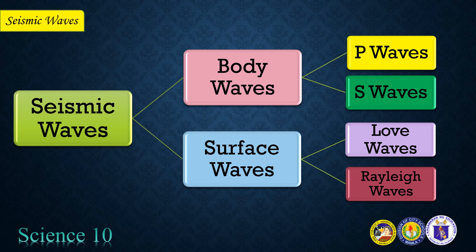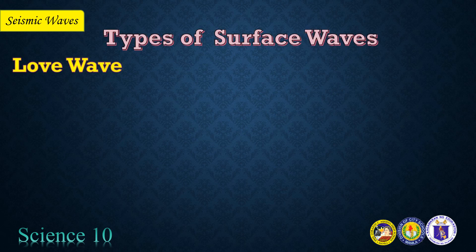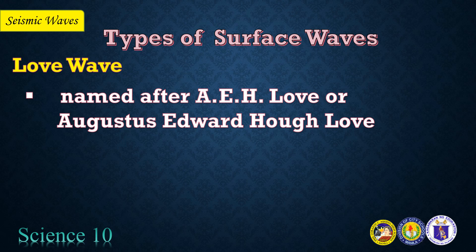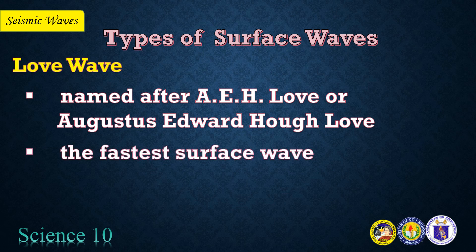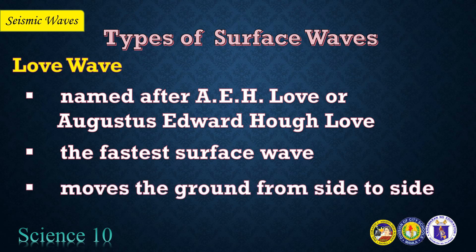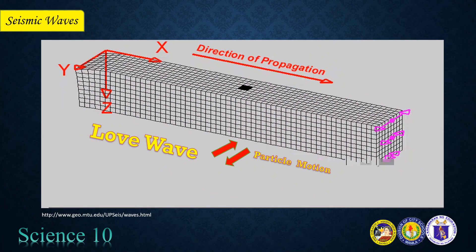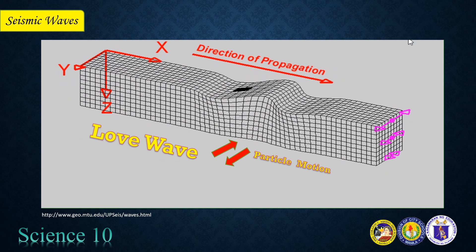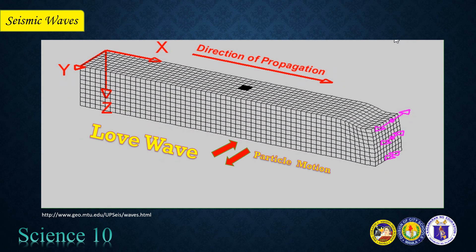Here are the two types of surface waves: Love waves and Rayleigh waves. Love wave was named after A.E.H. Love, or Augustus Edward Hough Love, a British mathematician who worked out the mathematical model for this kind of wave in 1911. Love wave is the fastest surface wave and it moves the ground from side to side. Here is a Love wave in action. Confined to the surface of the crust, Love waves produce entirely horizontal motion.